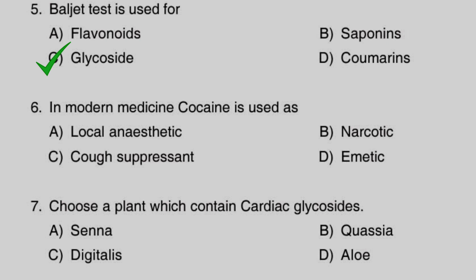Next question: in modern medicine, cocaine is used as — Option A: local anesthetic, Option B: narcotic, Option C: cough suppressant, Option D: emetic. The right answer is Option A, local anesthetic. Cocaine is used as a local anesthetic in modern medicine.